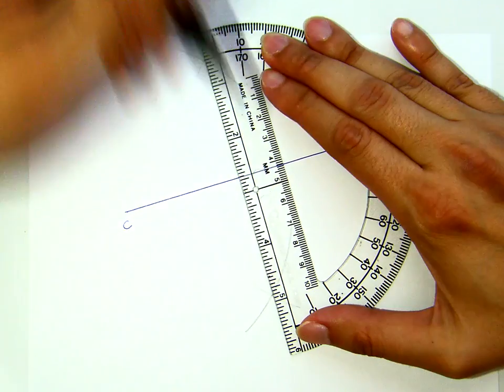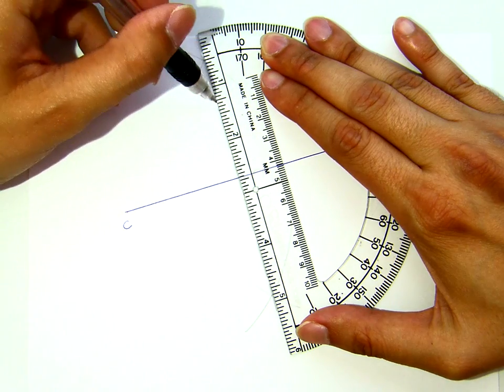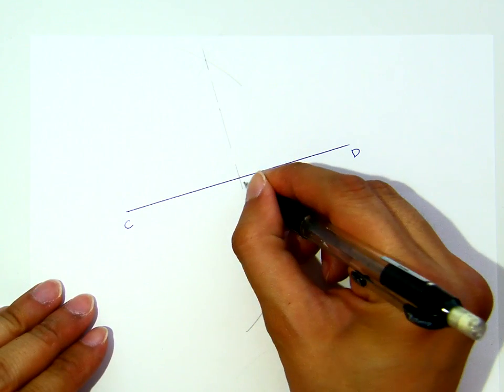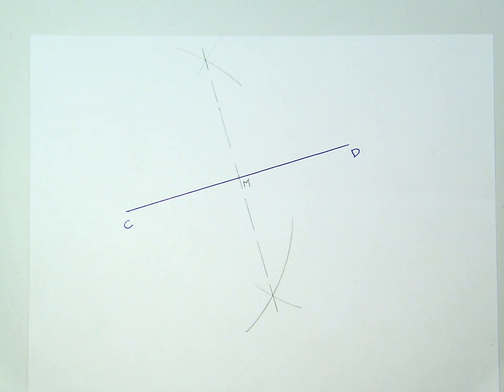I don't have to make it fully lined, but if you want, you can. But what we really want is actually this point here. This is point M. The process is done. This is the midpoint of segment CD.